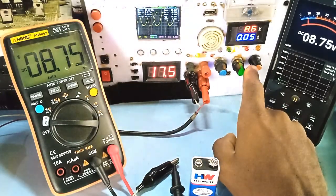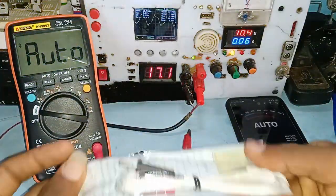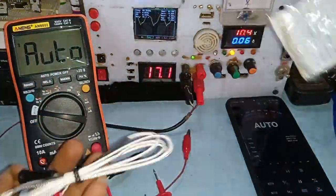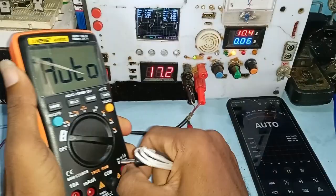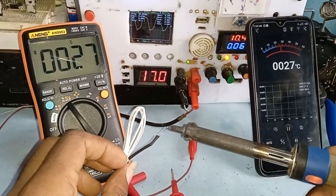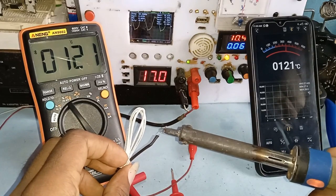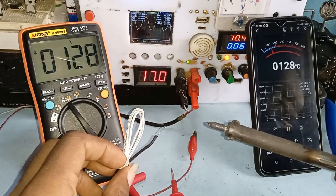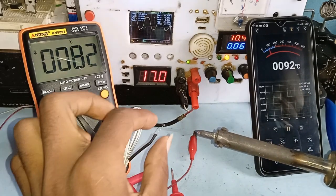Next is the measurement of temperature. Connecting the probe according to the manual, I read the temperature by placing my soldering iron close to the sensor. As you can see, we got some result as the temperature was rising.